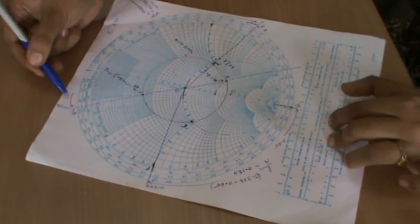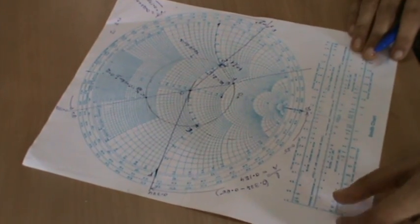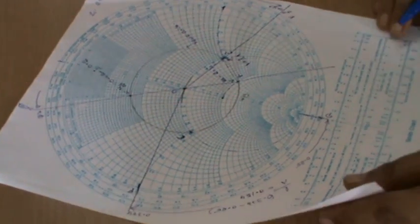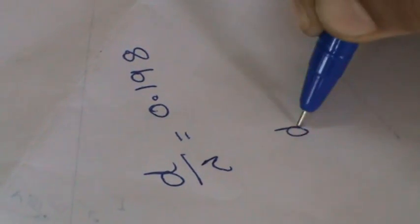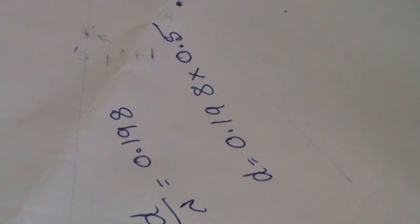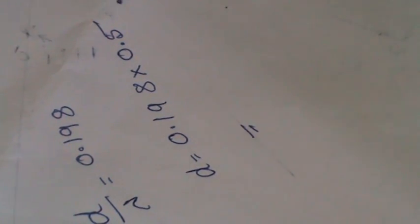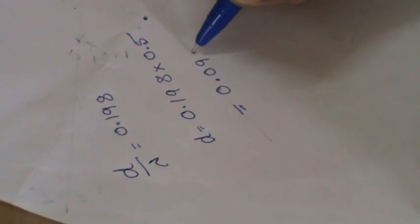I hope you have got how to obtain d by lambda and l by lambda. Once you have obtained these values, let me tell you how to obtain the actual value d and l. We have got d by lambda equals 0.198, so d equals 0.198 times 0.5. Remember lambda equals 0.5 and it comes around 0.099 meter.